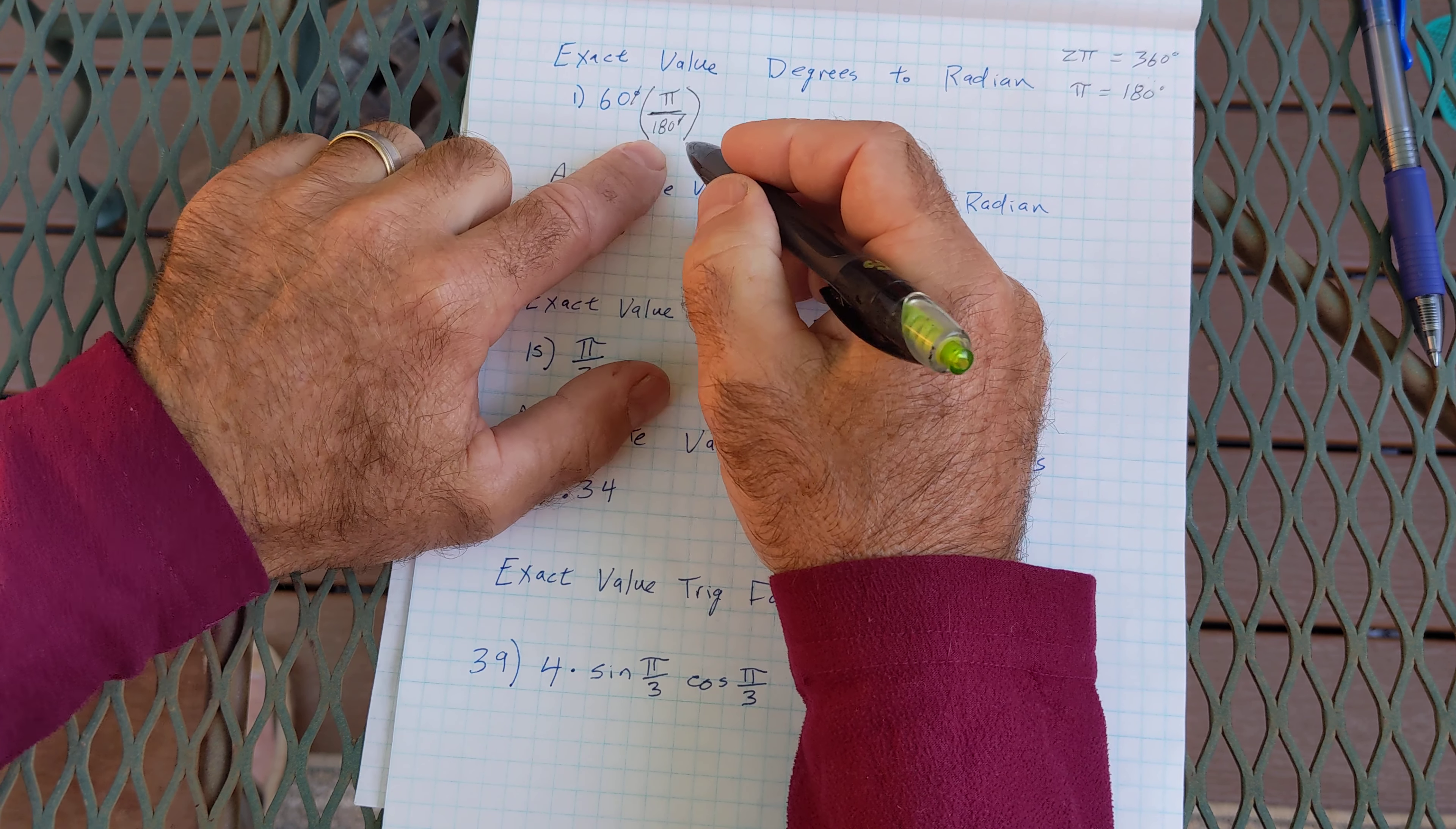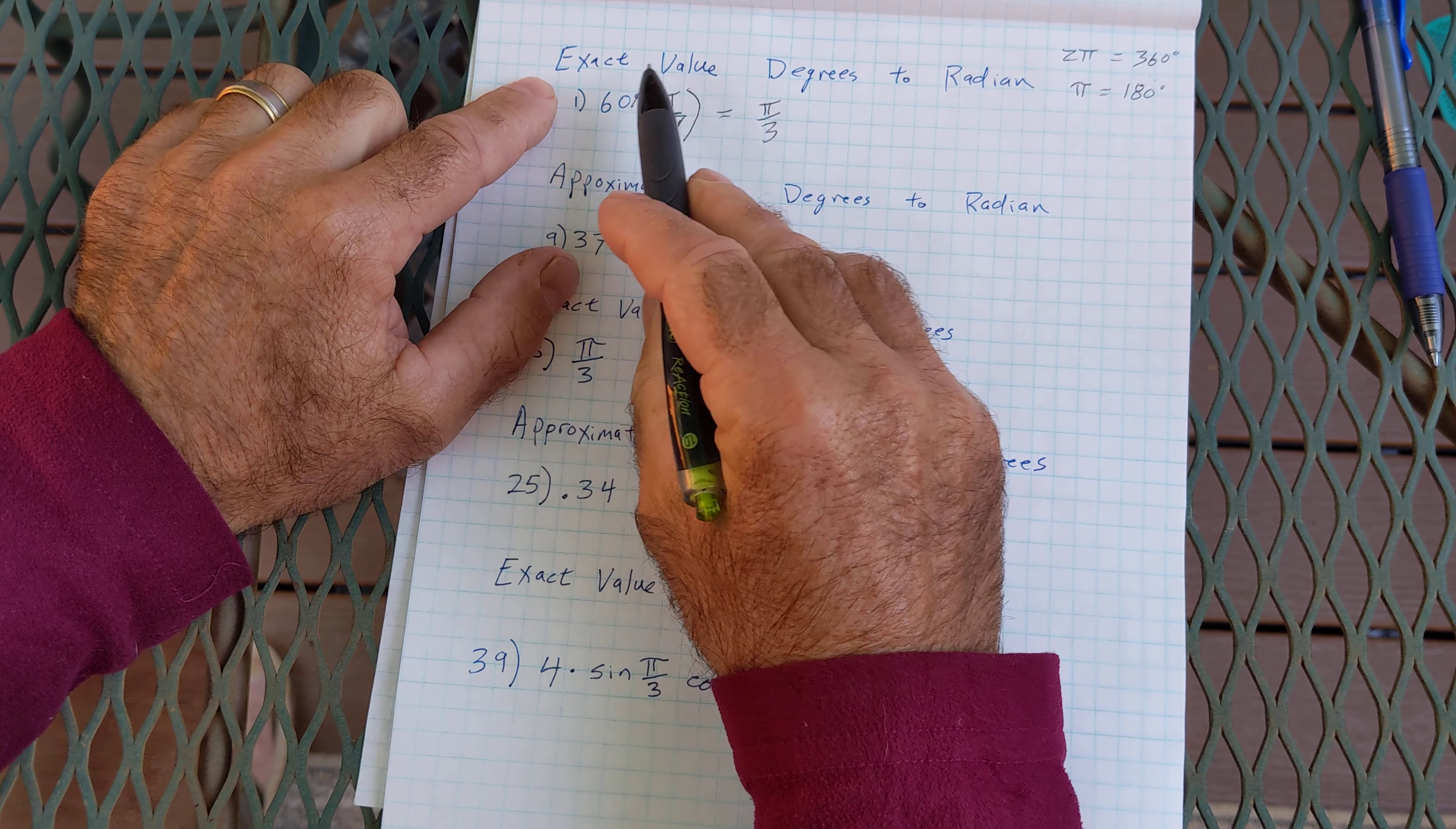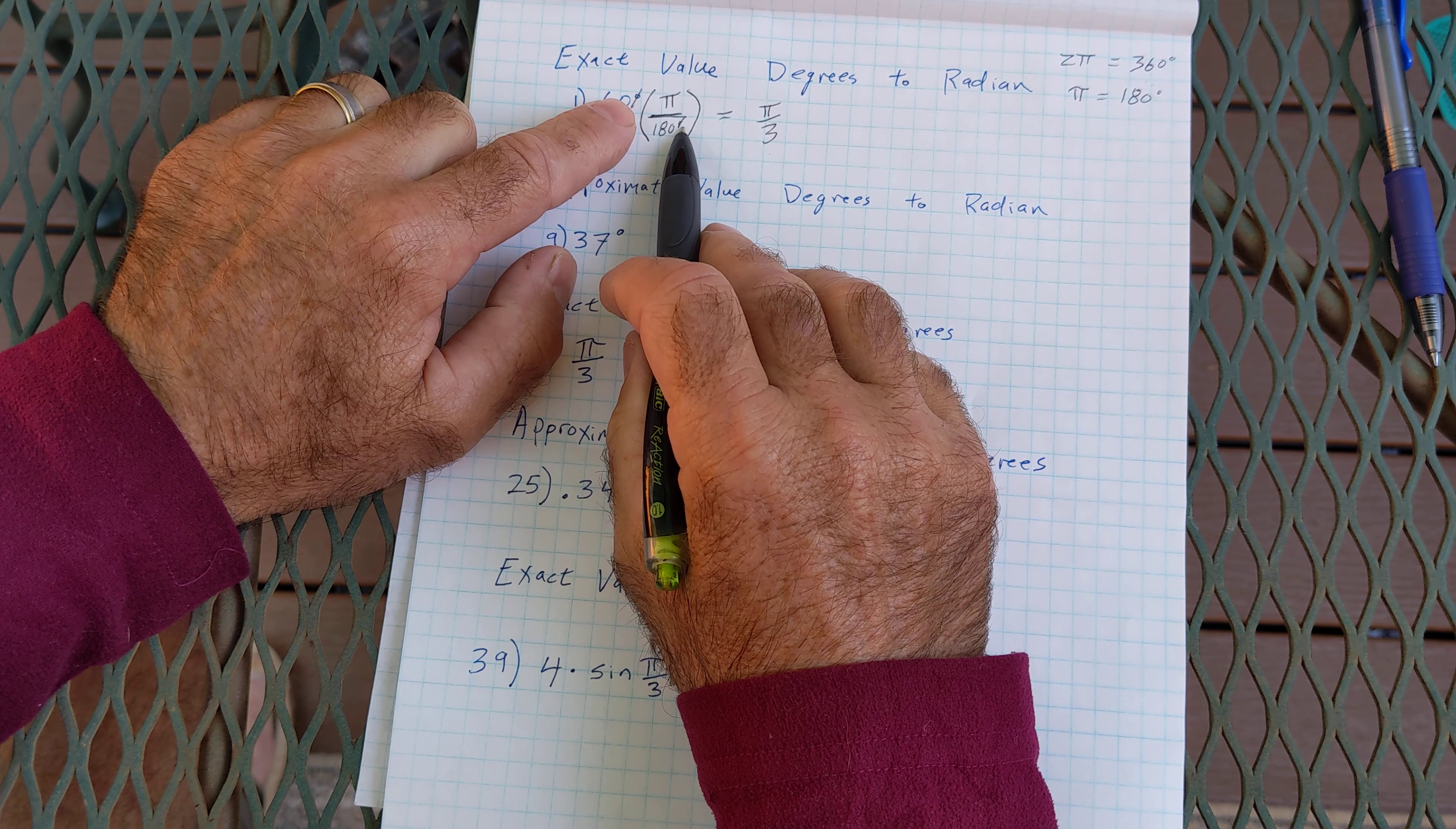60 will go in here one time, in here three times, and leave me with pi over 3. So that's an exact value, degrees to radians. I start with degrees, 60 degrees, and I end in radians. And my degrees cancel out.